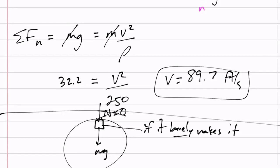So there are cases where it's not that we set v equal to zero — we set N equal to zero.